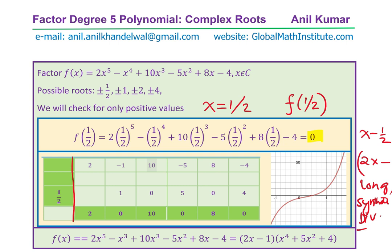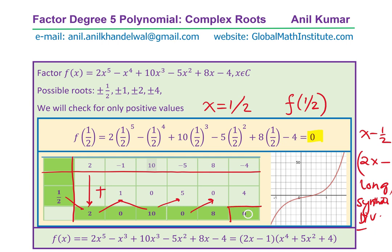To find the other factors, we use synthetic division. We write all the coefficients: 2, -1, 10, -5, 8, -4, and divide by ½. Bringing down 2; multiplying and adding: -1 + 1 = 0; 0 × ½ = 0, plus 10 gives 10; ½ × 10 = 5, -5 + 5 = 0; 0 × ½ = 0, plus 8 gives 8; ½ × 8 = 4, -4 + 4 = 0. The remainder is 0, as expected.